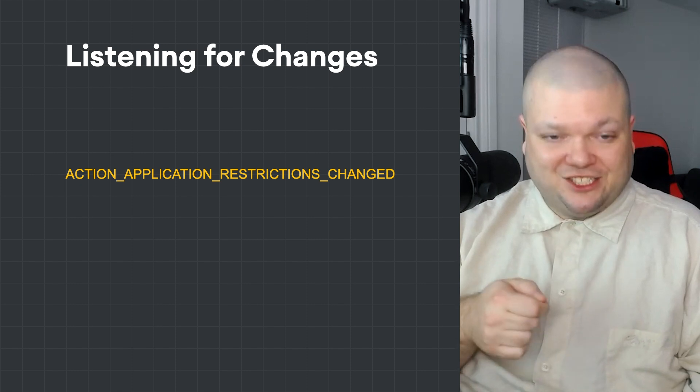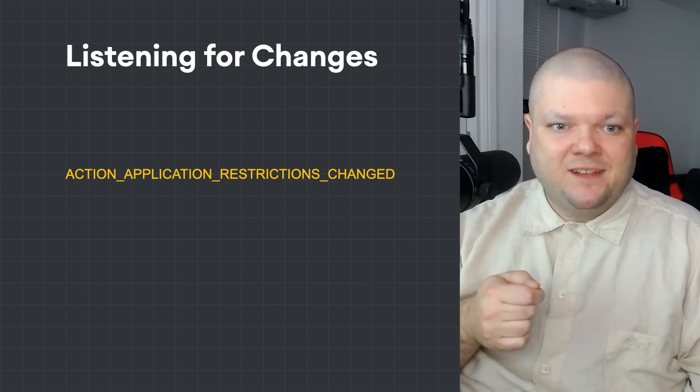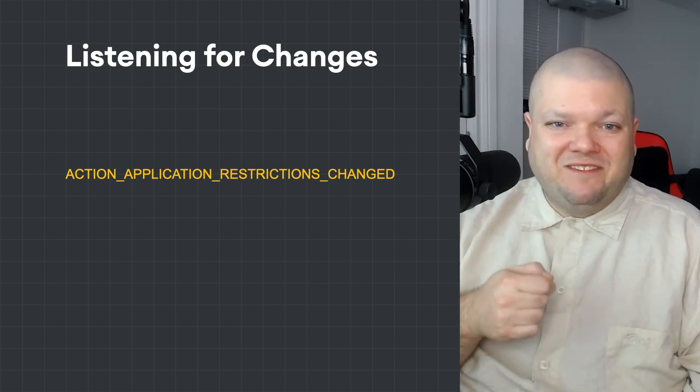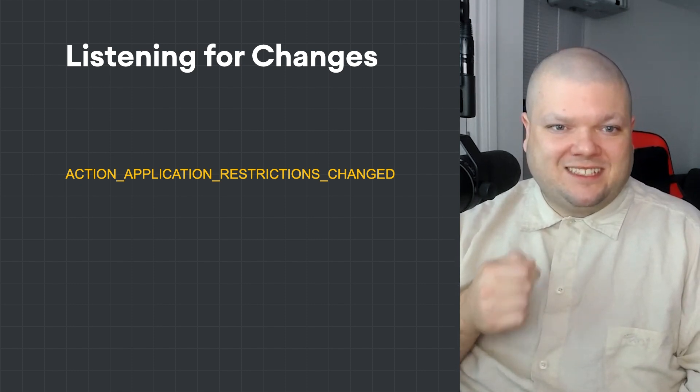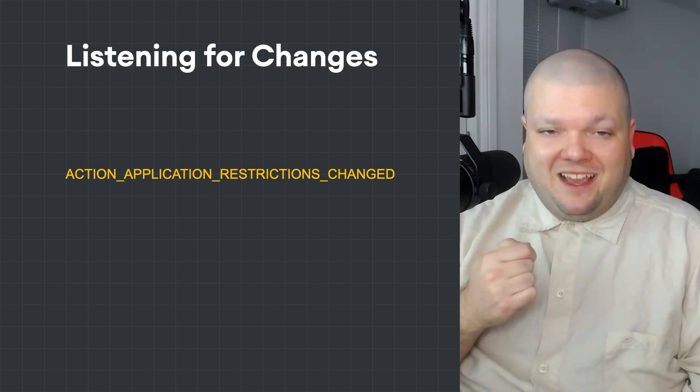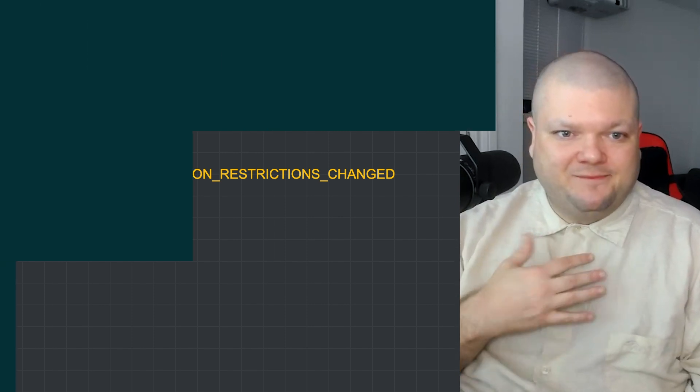You can also be notified of any configuration changes while your app is running by listening to the action application restrictions changed intent. Once triggered, you can retrieve the values the same way as during app launch and change the app's behavior accordingly.